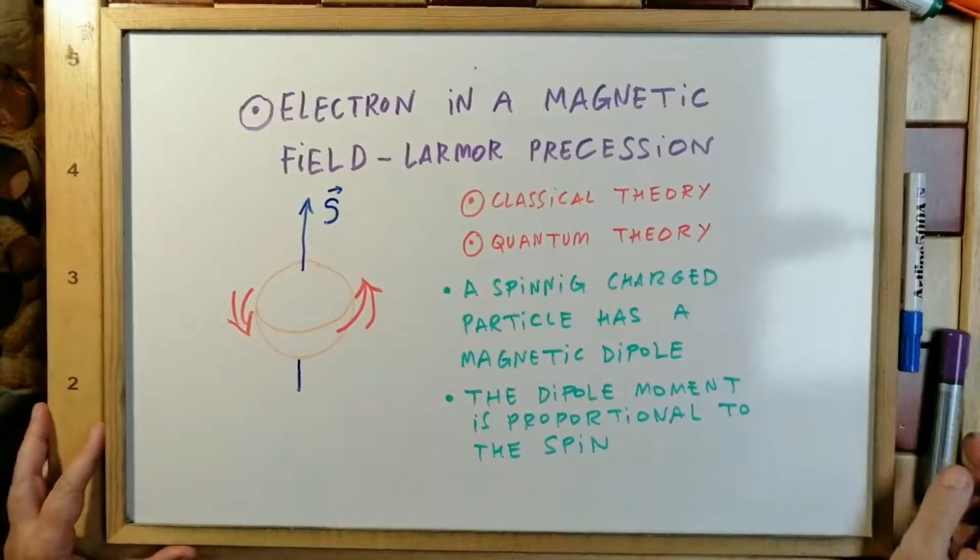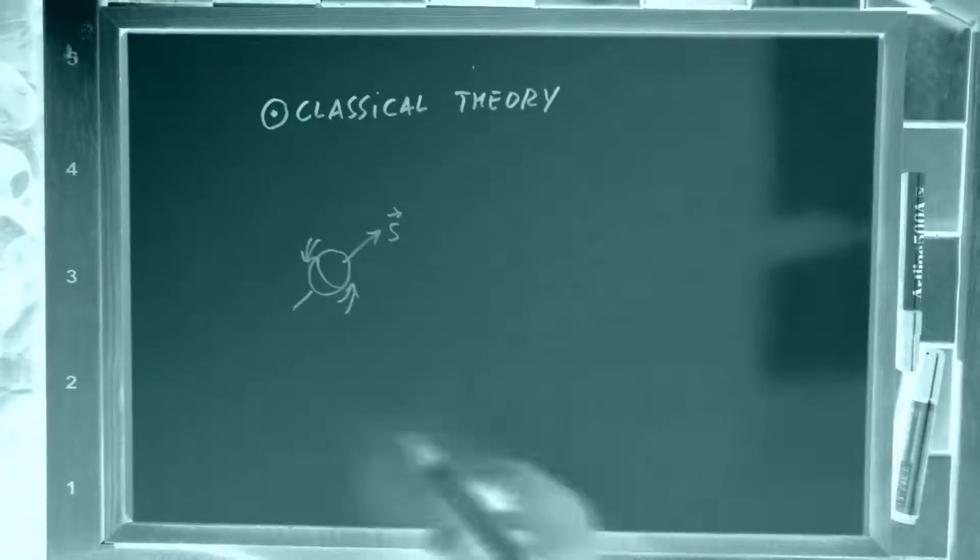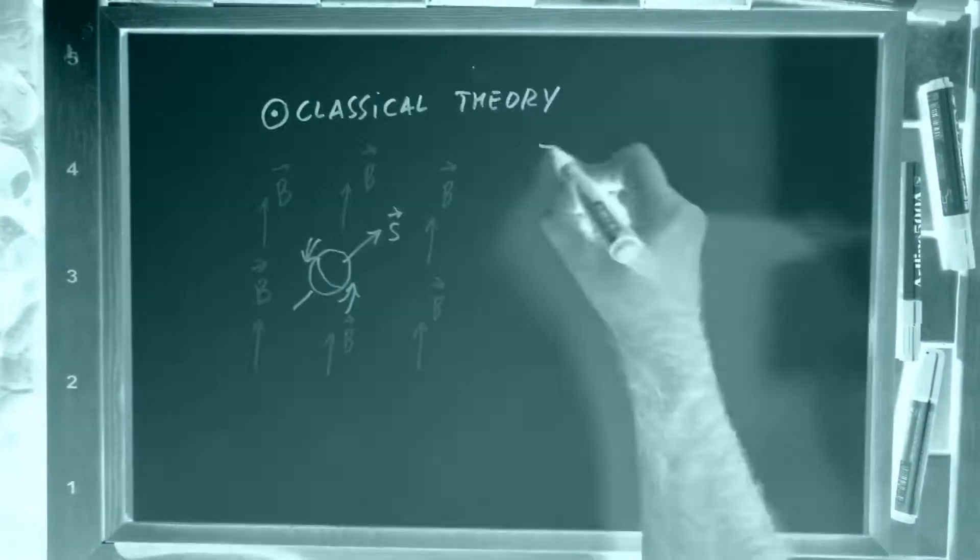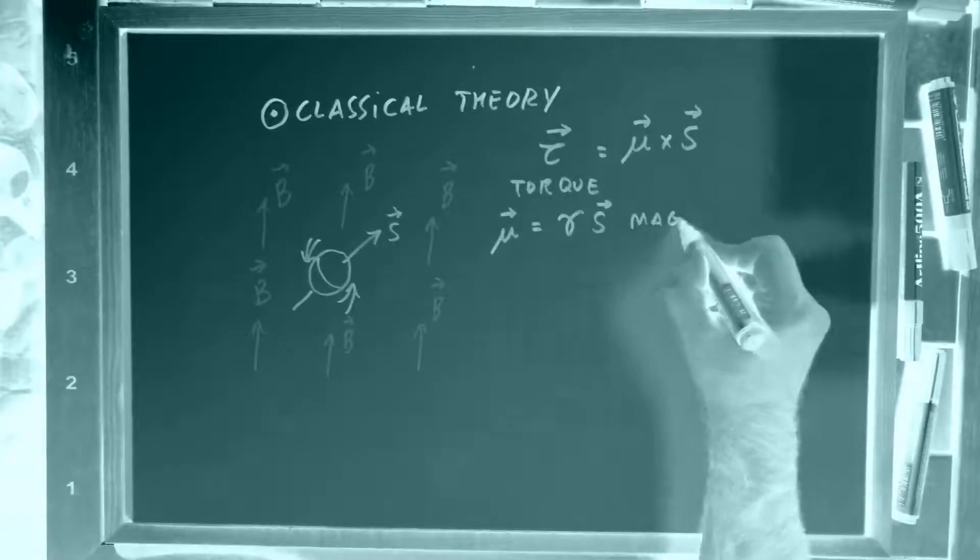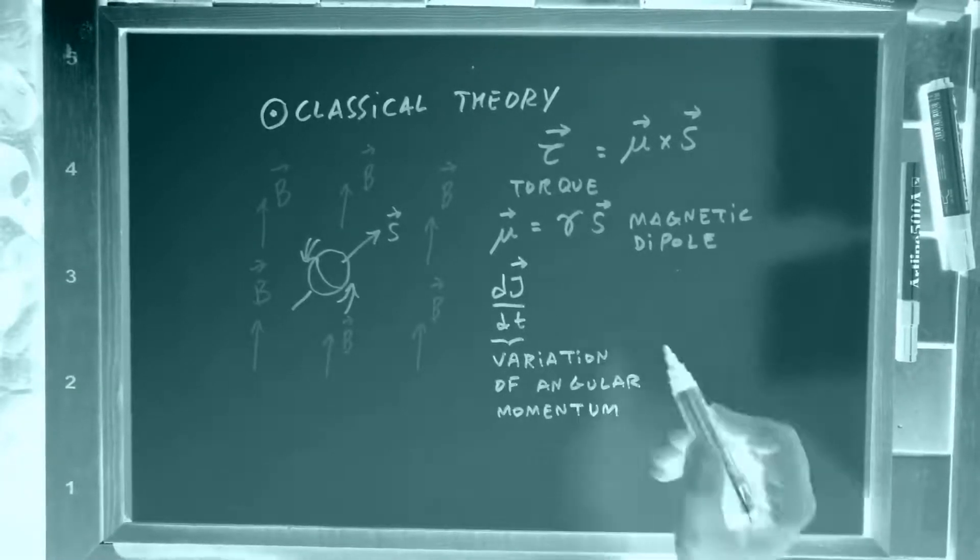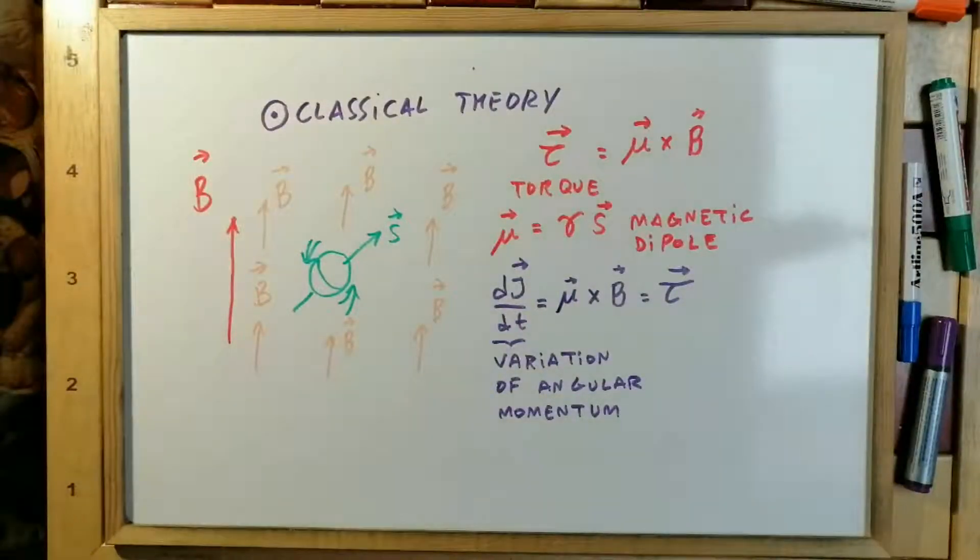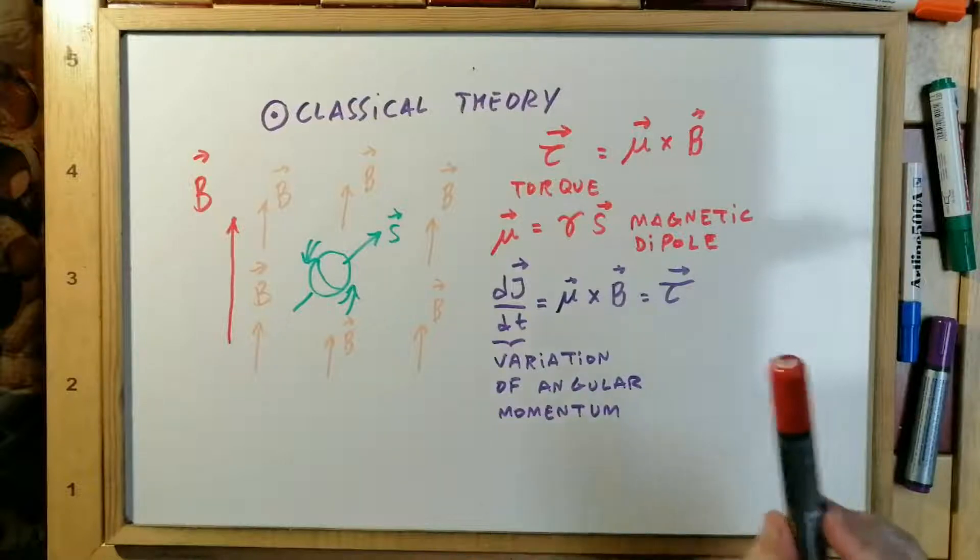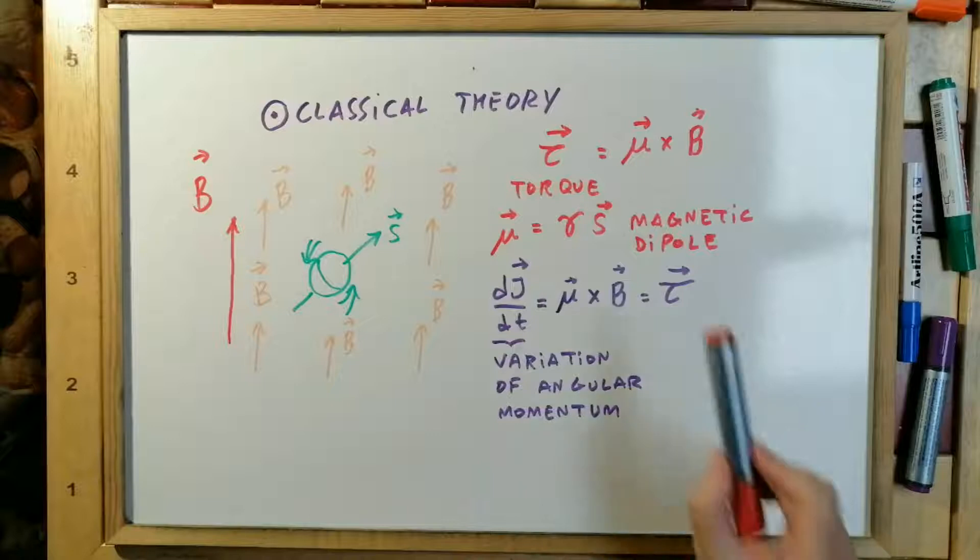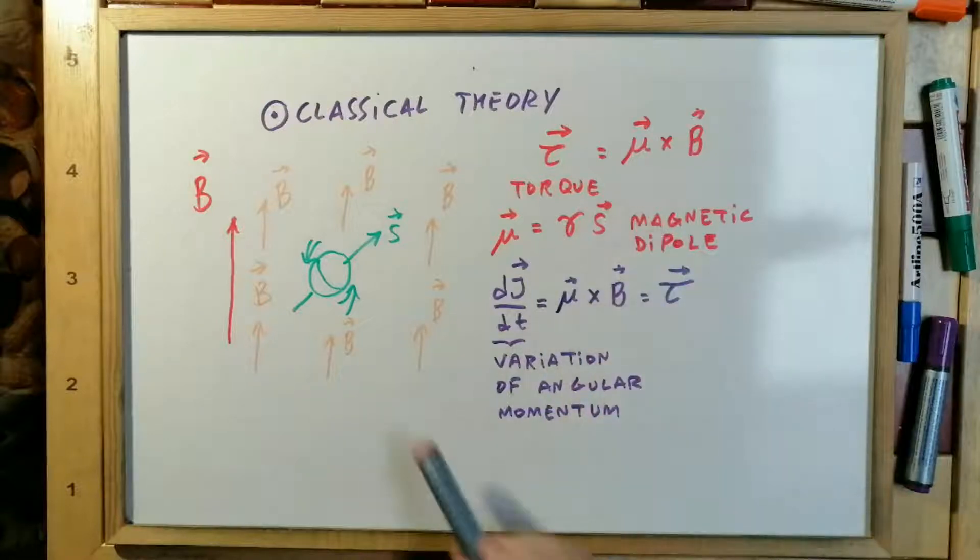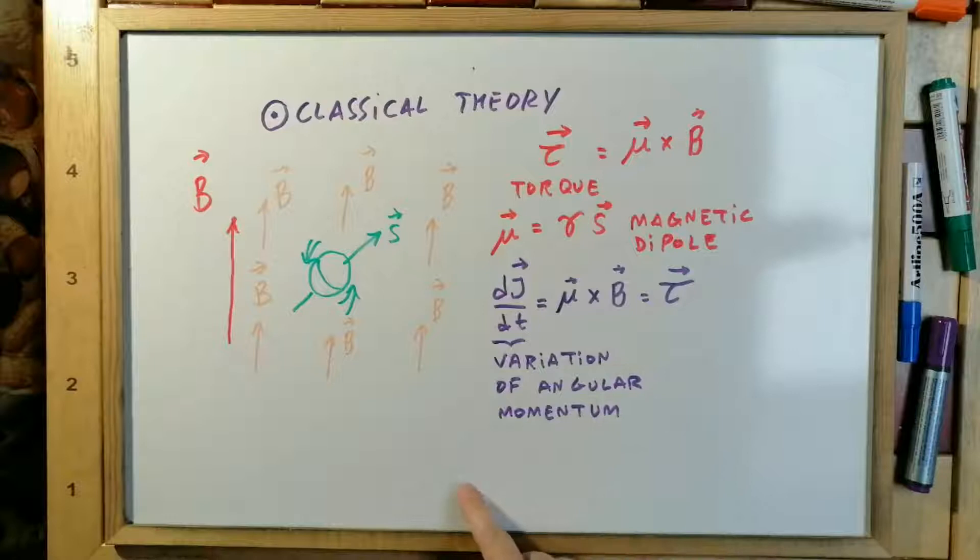Now we see the classical theory. In the classical theory, the particle placed in the magnetic field has a torque. The torque is given by the magnetic dipole and the magnetic field, and it produces a variation of angular momentum.